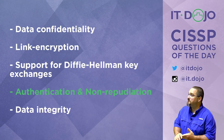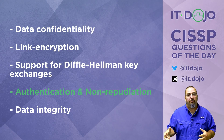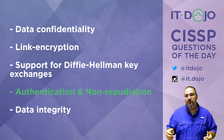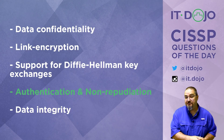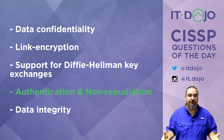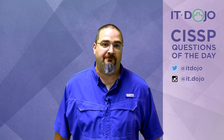The last answer choice is data integrity — and again, no, for the same reasons. Hashing algorithms are a mechanism of integrity. If you want trust and assurance from your hashing algorithms, then you can digitally sign the hashes, and that's where PKI would come into play — but data integrity by itself, negative. All right, that's two questions down. That's it. I'll see you next time. Bye, Felicia.